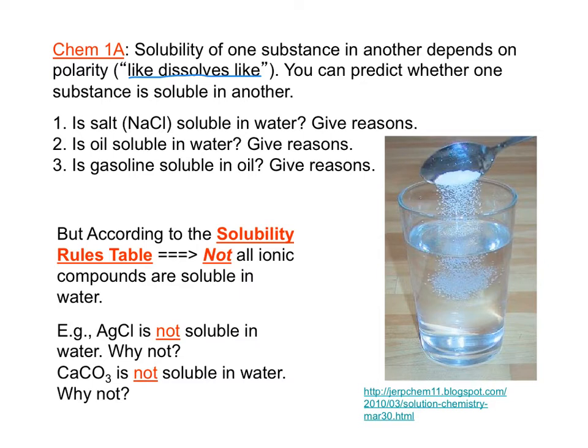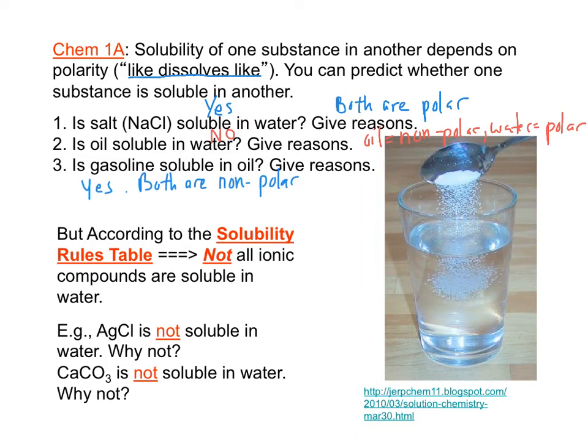Although ionic compounds are polar, not all ionic compounds are soluble in water according to the solubility rules table. For example, silver chloride and calcium carbonate are not soluble in water. Why not?